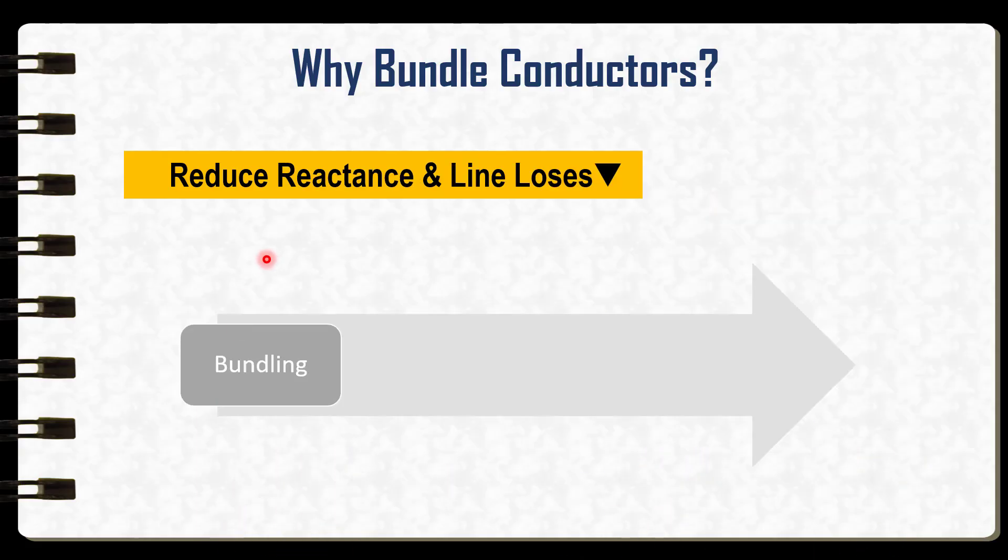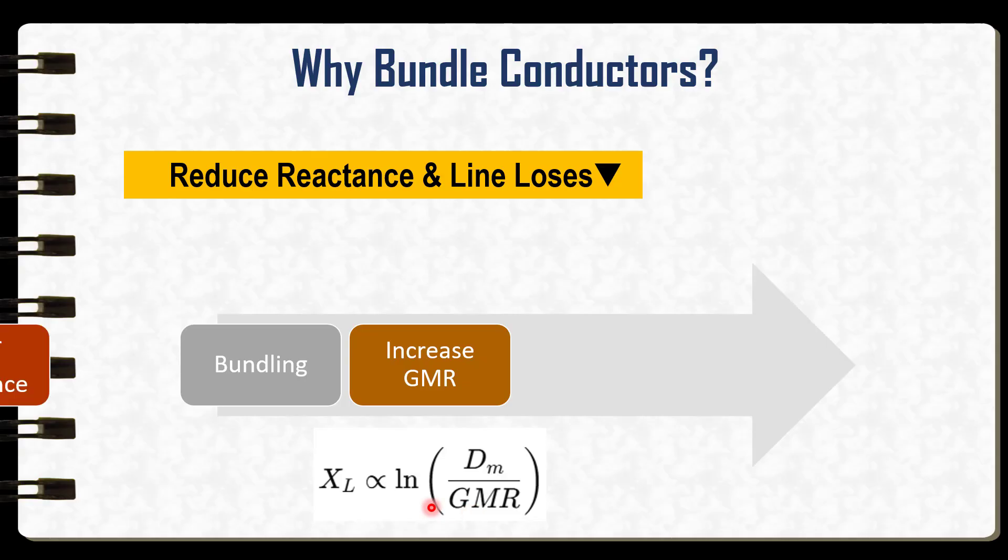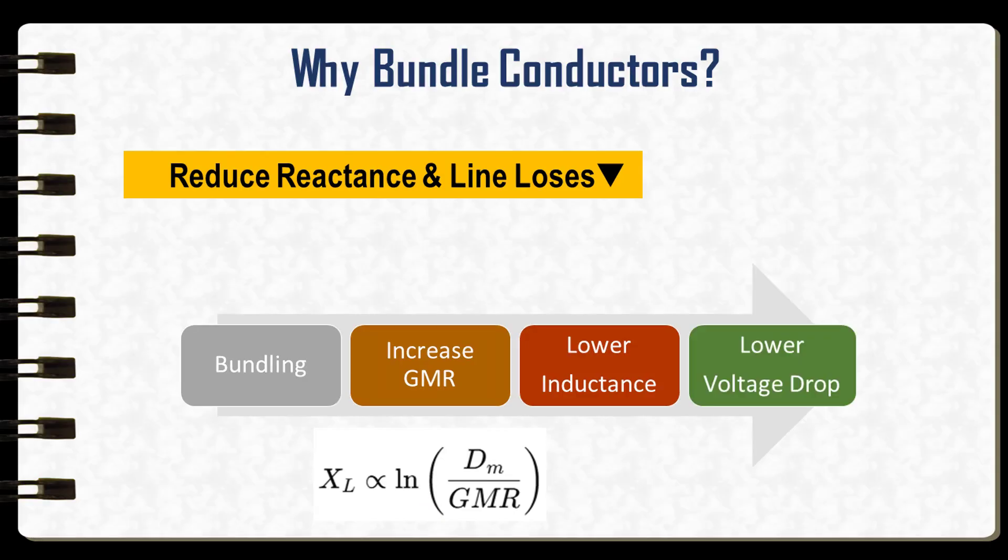How the bundle conductors reduce reactance and line losses. By bundling the conductors, the effective GMR of a phase is increased and the line reactance is related to the GMR by this expression where you can see that the line reactance is inversely proportional to the GMR. So increasing the GMR reduces the line reactance and thereby increasing the capacitance and thus reducing reactive power loss and improving overall transmission efficiency.